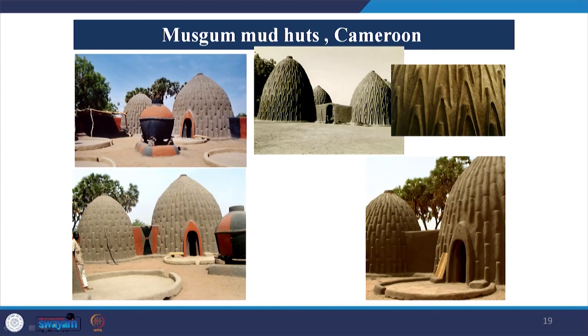Another very interesting example is that of Musgum mud huts from Cameroon. The geographic context of these huts is an absolute desert, where there is hardly any availability of rain. But the desert does not have only sandy soil — there is mud available, and this mud is largely brought from the termitaries.